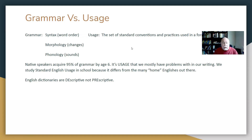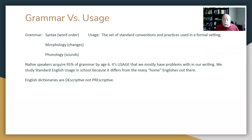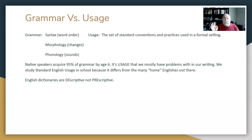We also talked about grammar versus usage. Most people have no problem with grammar. If you're a native English speaker, you grow up knowing how to use grammar — by the age of four, you know what grammar is. Grammar is basically three things: syntax, which is word order; morphology, which is how words change — swim, swam, swum; have, had, has — the declensions of verbs and things of that nature; and phonology, the kinds of sounds we make with our mouth and vocal cords. So all grammar is made up of those three things.